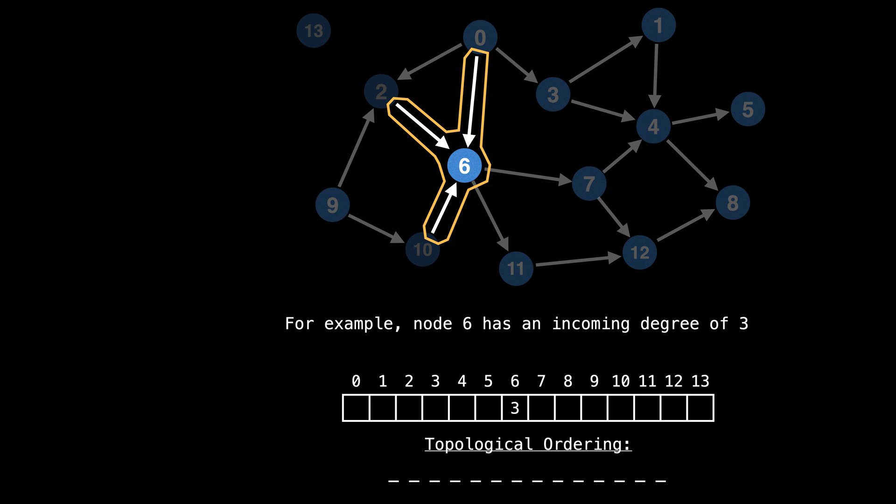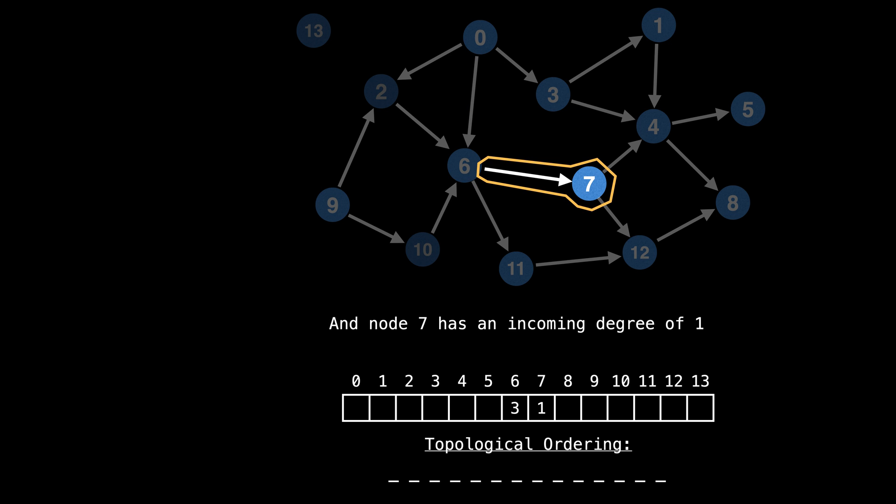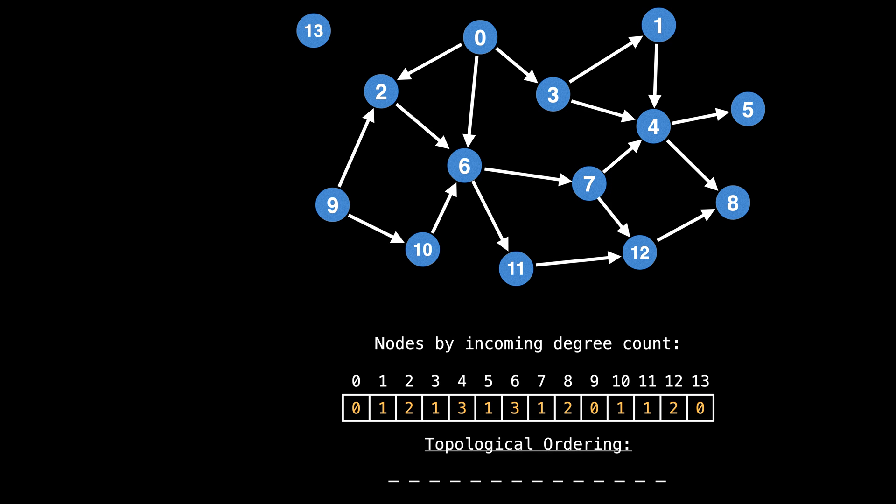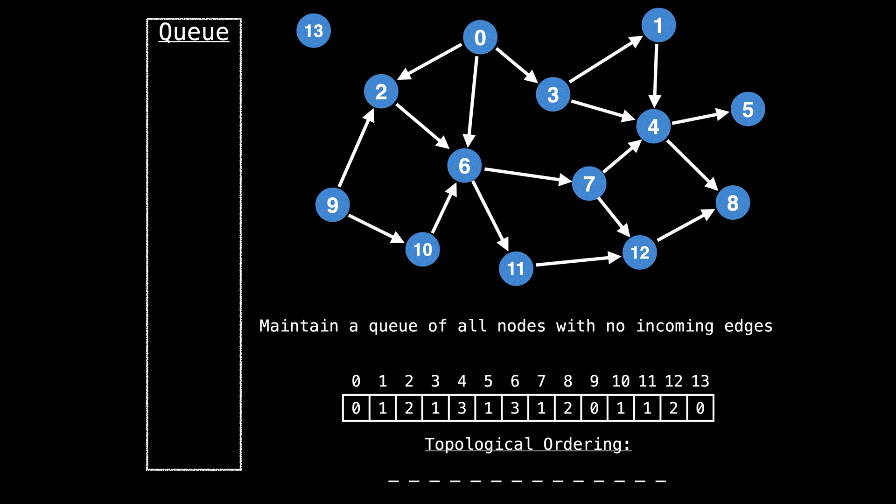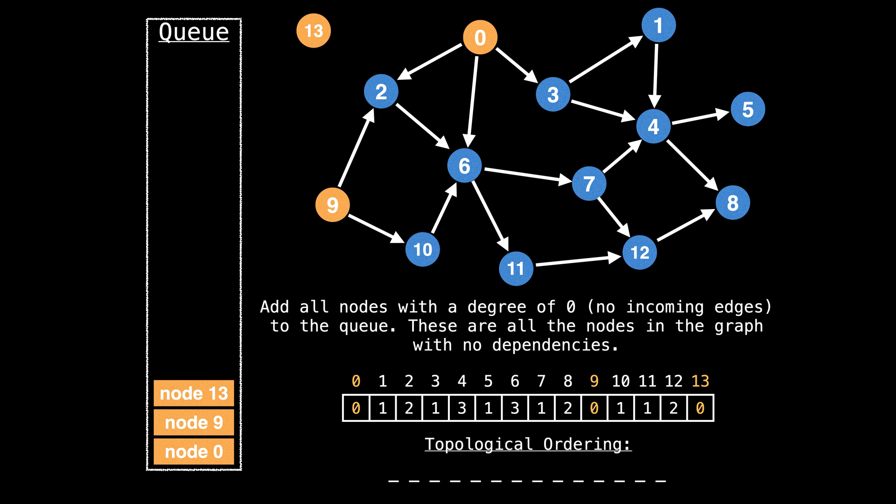The degree of each node is important because it allows us to know whether a node has dependencies or not. For example, node six has an incoming degree of three because there are three edges pointing to node six, and node seven has an incoming degree of one. Now that we know what the in-degree of a node is, we can go ahead and calculate the in-degree of each node and store it in an array. The way we're going to keep track of which node to process next is with a queue, which will keep track of all the nodes we need to visit which have no incoming edges.